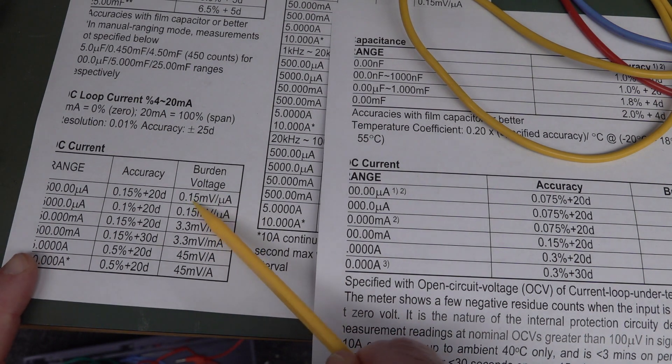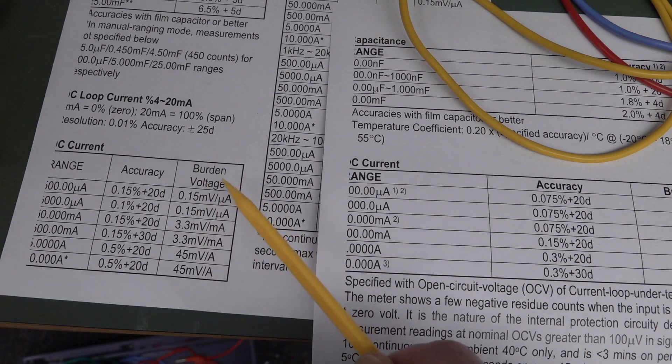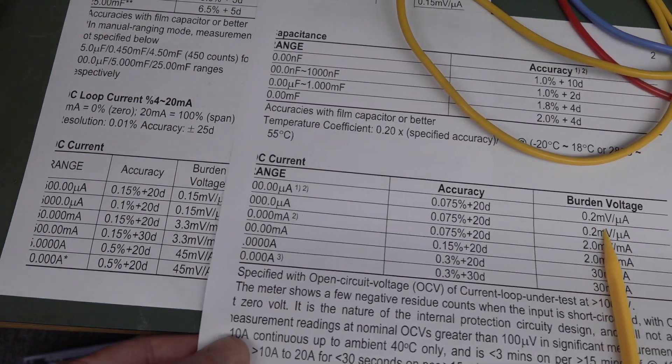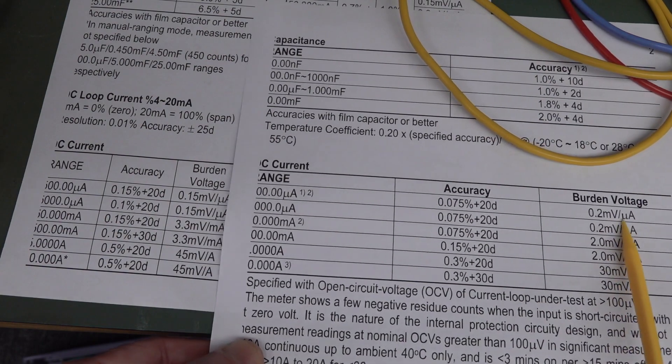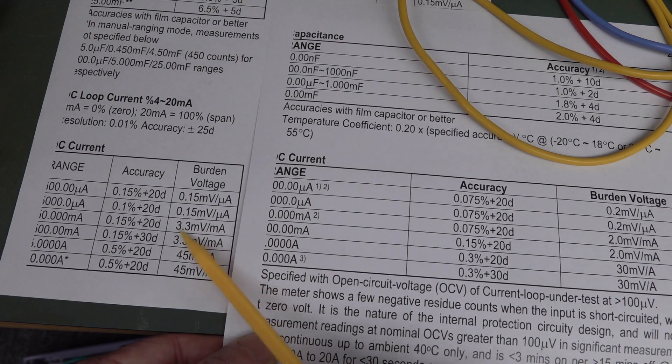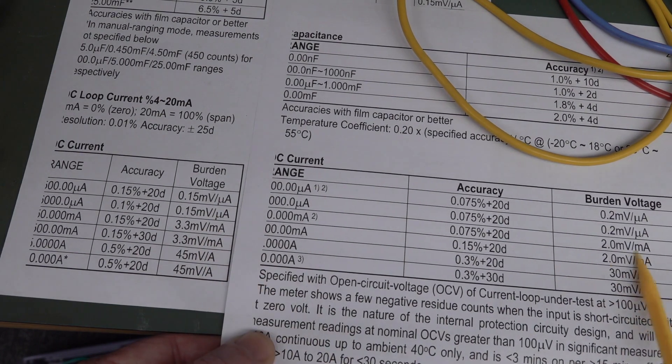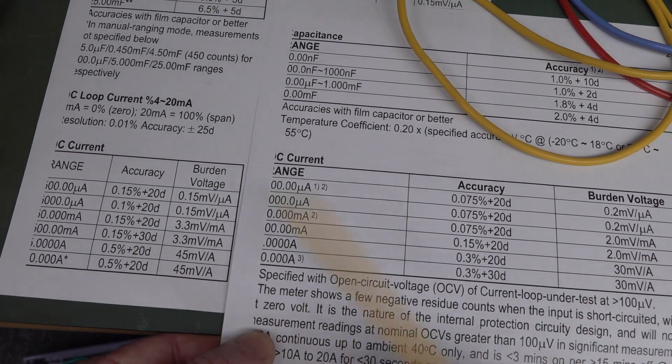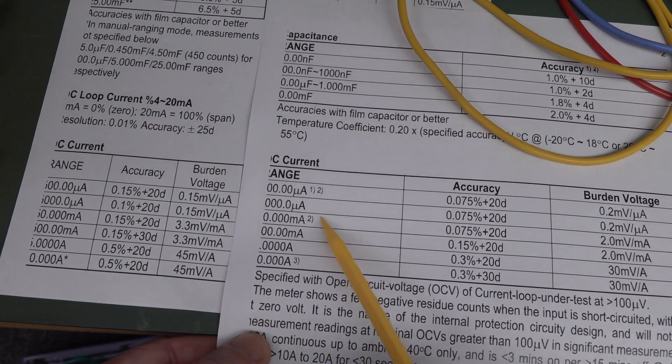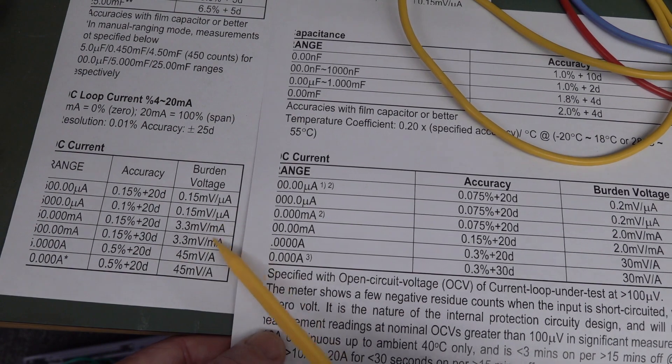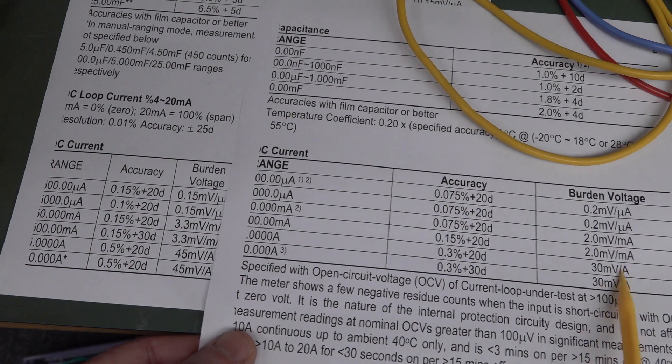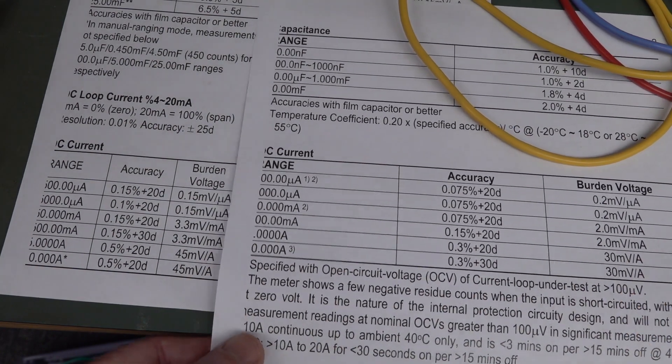The burden voltage is 0.15 millivolts per microamp versus 0.2 over here, so we could actually measure that, but I won't. It's significantly higher over here, and the 786 has a lower burden voltage on the two major milliamp ranges than the 869. So it's a better spec and a better burden voltage, and it's lower on the amps as well.